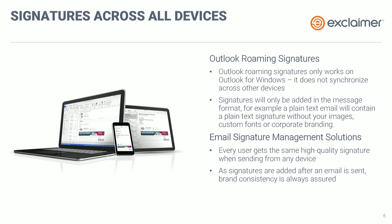Anecdotally, when IT professionals and marketing professionals consider email signatures and reaching true conformity across the board, they really mean that same high-quality signature they've designed when their users are sending from any device. With a third-party tool, you can confirm that signature is going to take effect regardless of the situation — the signature is applied as part of the process of the email service. After the email is sent, brand consistency is achieved at that point and is therefore always assured.